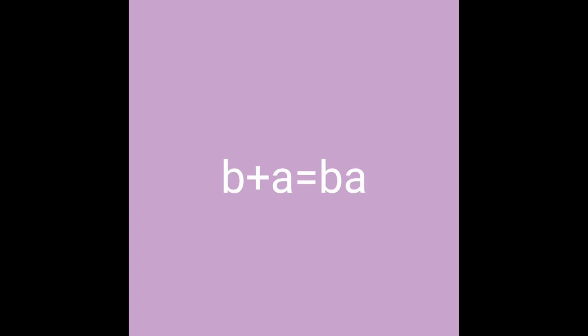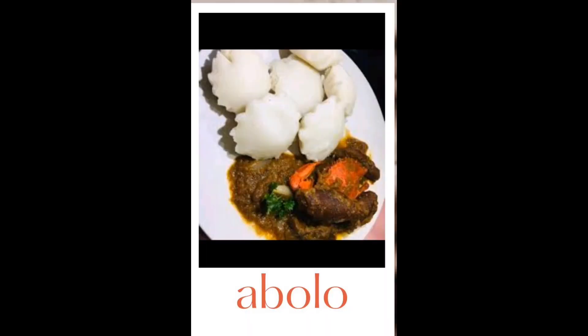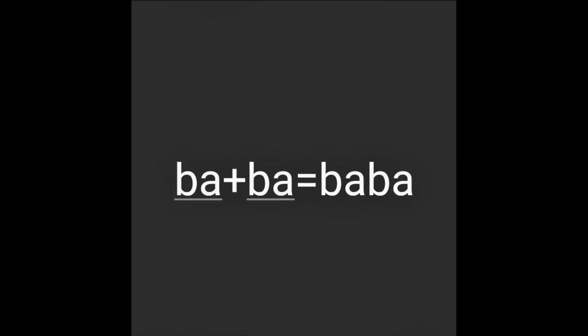Now let's move on to words. A-bo-lo. A-bo-lo is a Ghanaian food, and this is the picture. Ba and ba will give us baba.